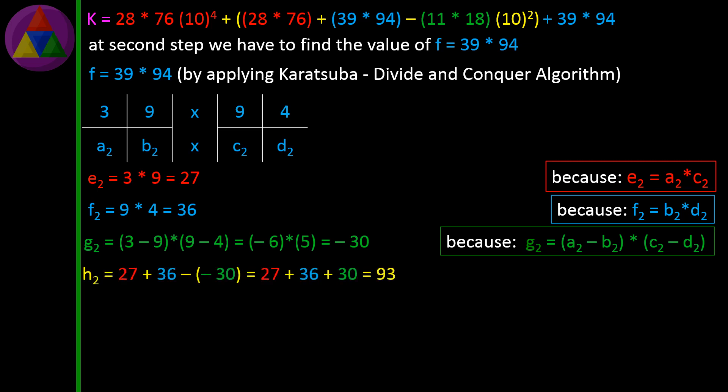H2 = 27 + 36 − (−30) = 27 + 36 + 30 = 93, because H2 = E2 + F2 − G2.